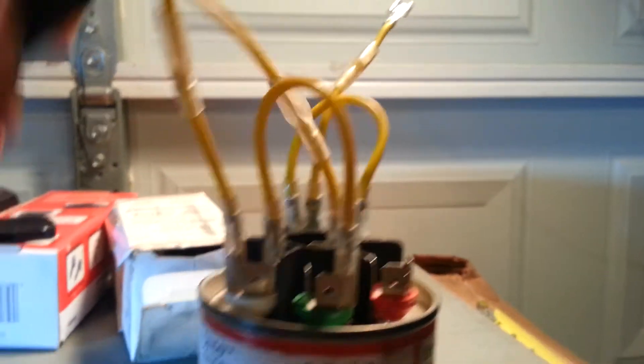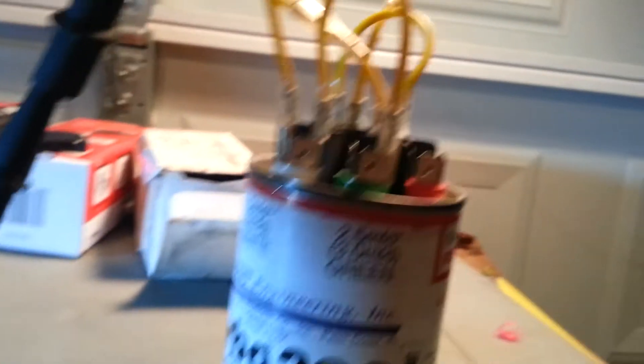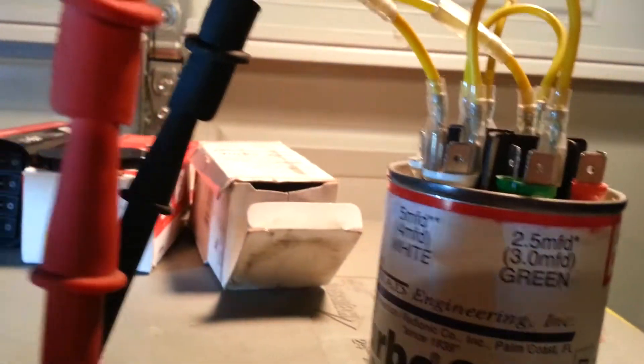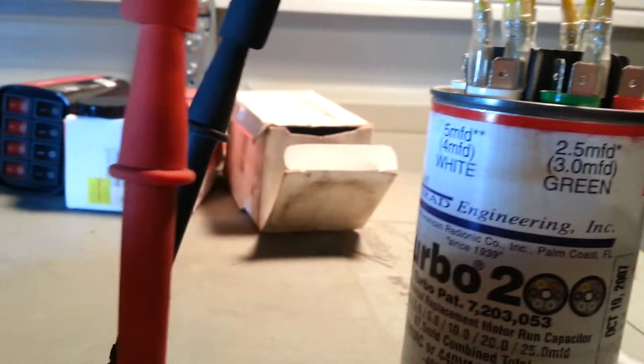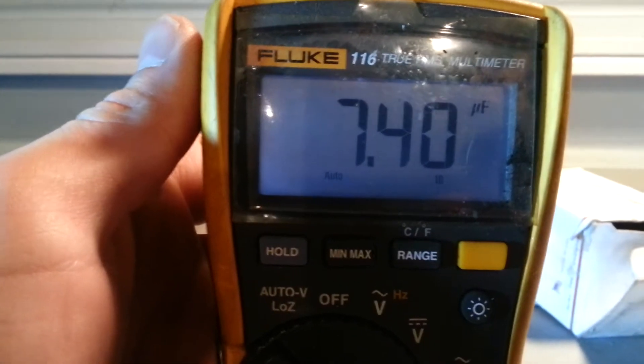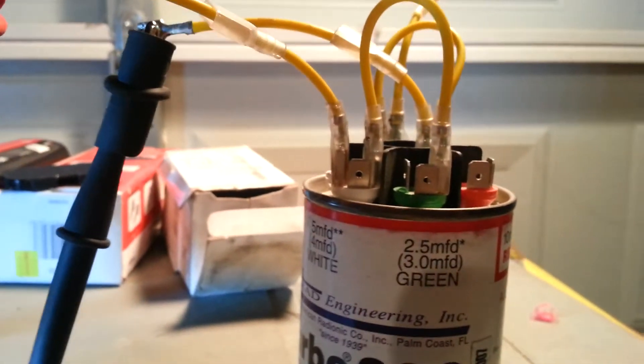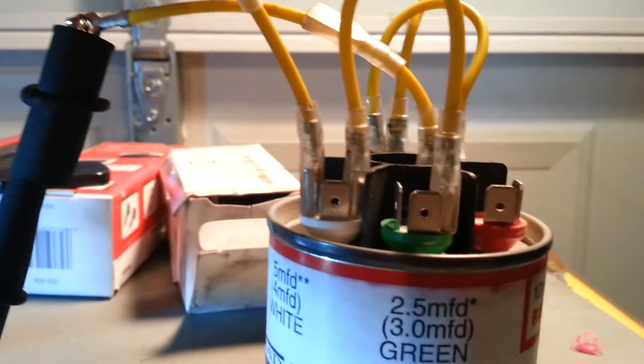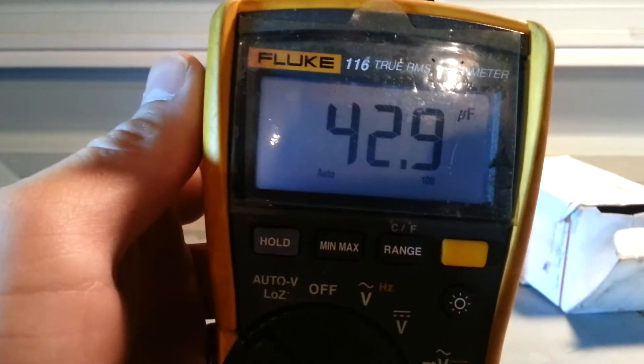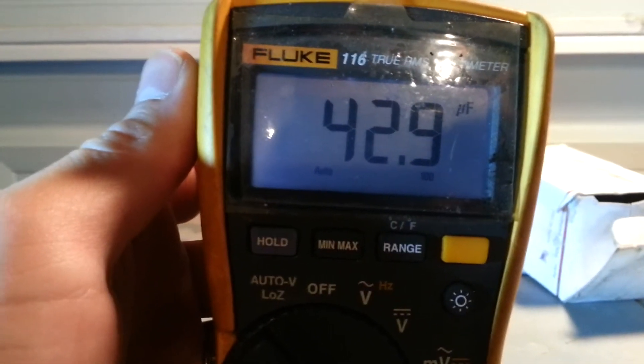Let's get some measurements. So, this will be the 7.5 side. Get my trusty Fluke 116 out here. 7.4. So, that's good. And I'll check the 45 side here. 42.9.